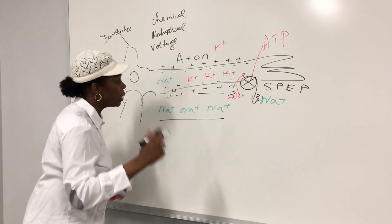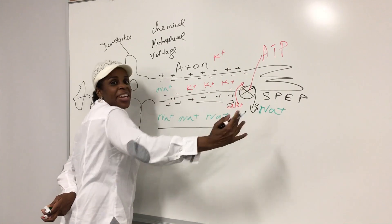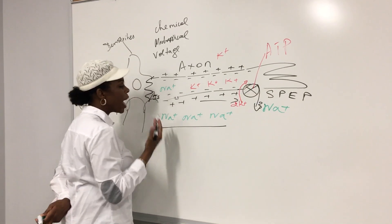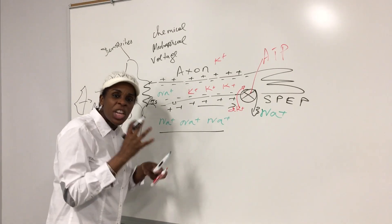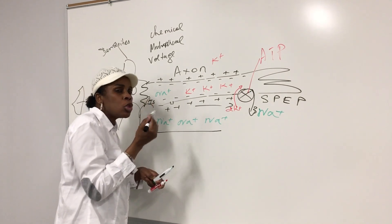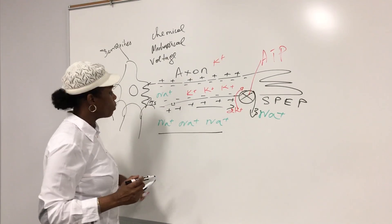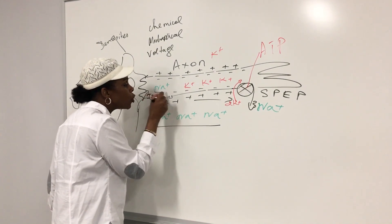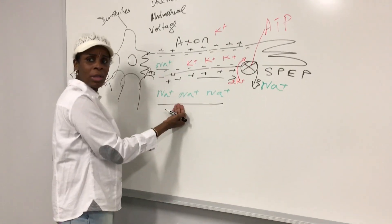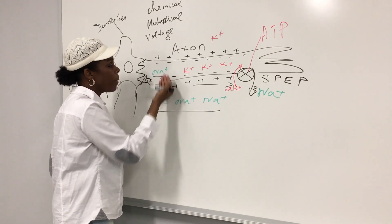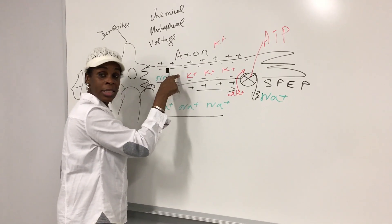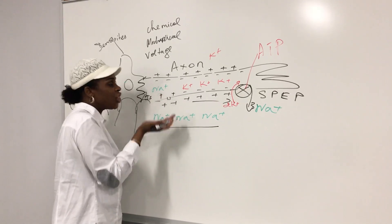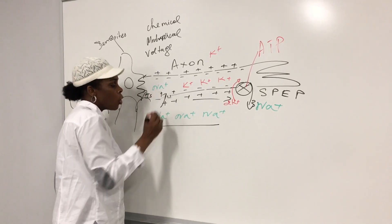When we talk about the action potential, we said it will propagate from the initial segment to the axon terminal. It happens because you have a lot of graded potentials — small stimuli that open a little door and add up to become an action potential. During that action potential, a lot of stimulus comes to open some sodium channels. Because there's a lot of sodium outside, it will go in. That sodium coming in will change the charges of the inside of the cell — changing it from negative to positive. The change from negative to positive is called depolarization.